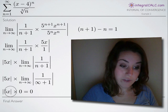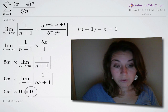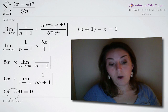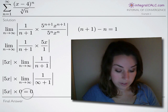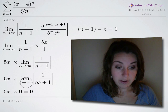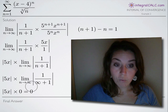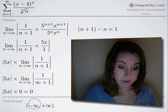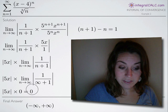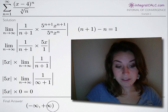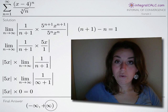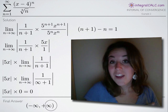So we're left with the absolute value of 5x times 0, which equals 0. Normally we'd set something like the absolute value of 5x less than 1 and continue. However, whenever you end up with 0 after taking this limit, it means the interval of convergence is all real numbers — from negative infinity to positive infinity. You don't need to go further to test endpoints or anything like that. So whenever you get 0 at this step, negative infinity to positive infinity is your final answer.